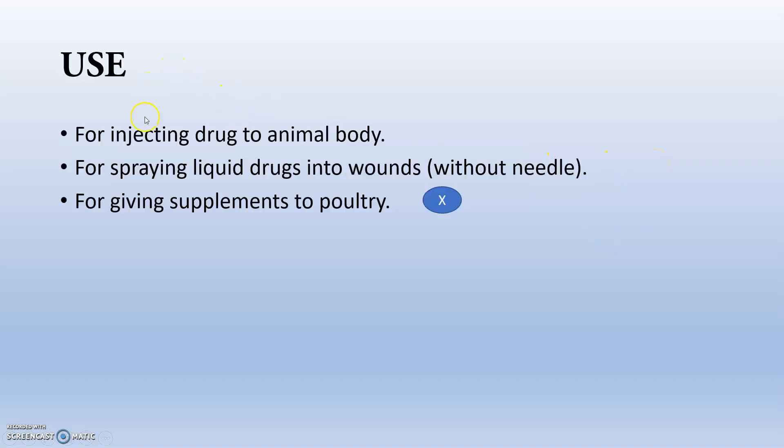So what is actually the use of a syringe? It is basically for injecting drugs into the animal body via a needle — that is the main point. It is also used for spraying liquid drugs into wounds without a needle. We actually use the syringe for spraying liquid drugs into wounds, like ivermectin in the case of maggots and all.